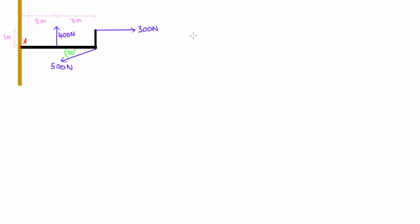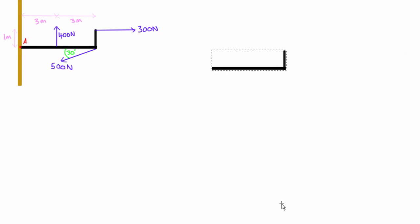The first thing we need to do is draw our free body diagram. We label it so people know we're looking at the free body diagram, and then we put on our coordinate axis — X and Y. Then we add on all the external forces acting on this L-shaped bracket. We're separating it from the wall and just considering the free body diagram of this bracket.